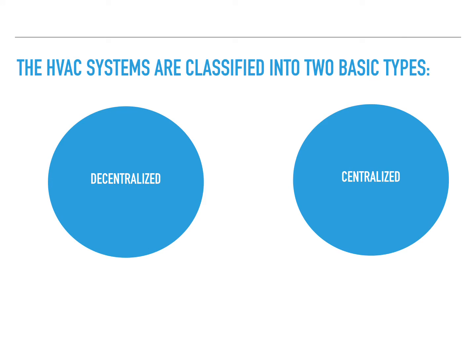HVAC systems can be classified under two categories. The first one is the decentralized HVAC system and the second one is the centralized HVAC system. In the following slide we're going to be highlighting the main differences between centralized and decentralized HVAC systems.